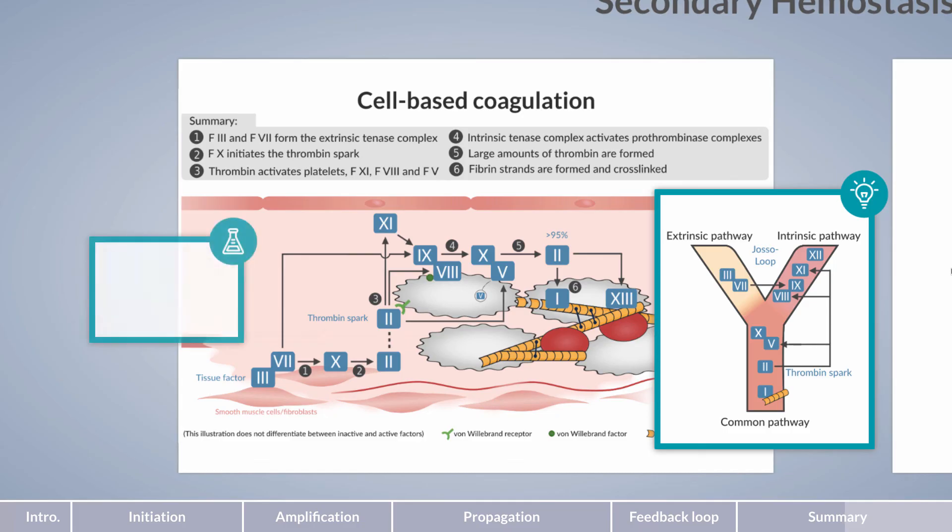Maybe all of these steps can be better remembered if you refer to them by their three phases. These are termed initiation, amplification, and propagation. Initiation is similar to the extrinsic pathway and occurs on the cells of the vascular wall. Amplification takes place when small amounts of thrombin initiate the intrinsic system on platelets. During propagation, numerous tenase and prothrombin complexes assemble on the platelet surface. When these complexes accumulate, large amounts of thrombin in fibrin form, resulting in a thrombin burst.